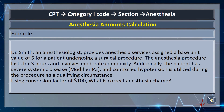Let's take an example. Dr. Smith, an anesthesiologist, provides anesthesia services assigned a base unit value of 5 for a patient undergoing a surgical procedure. The anesthesia procedure lasts for 3 hours and involves moderate complexity. Additionally, the patient has severe systemic disease, and controlled hypotension is utilized during the procedure as a qualifying circumstance. Using a Conversion Factor of $100, what is the correct anesthesia charge?